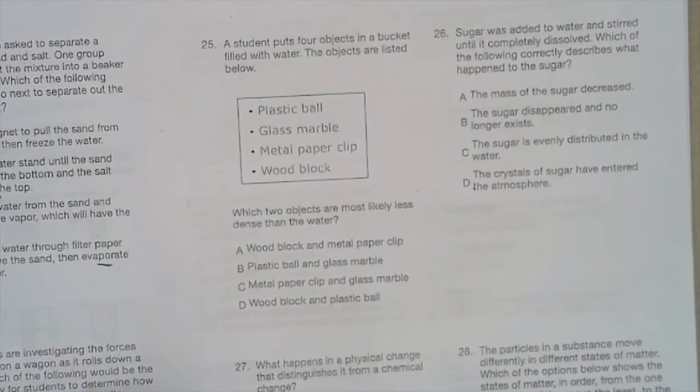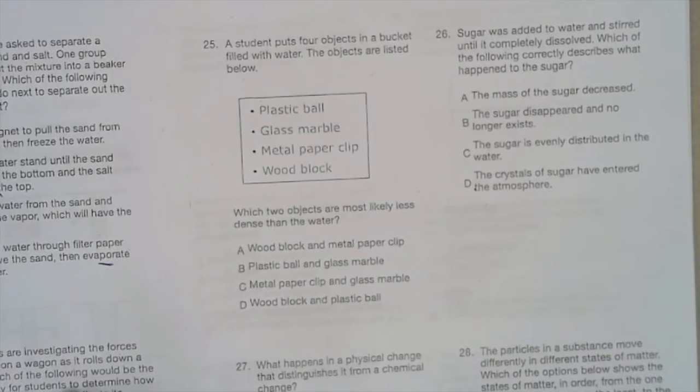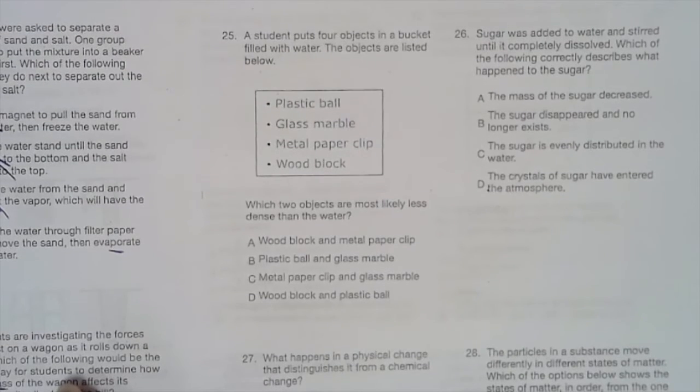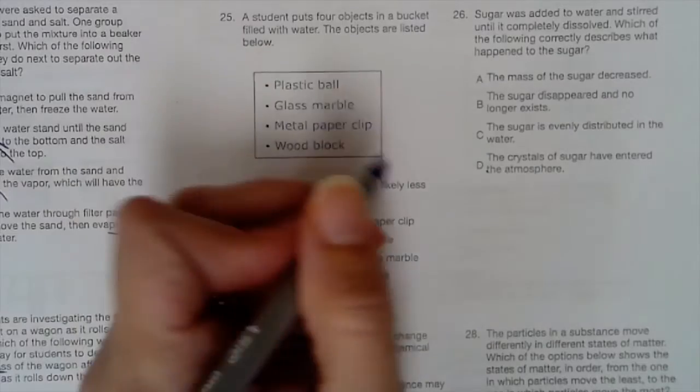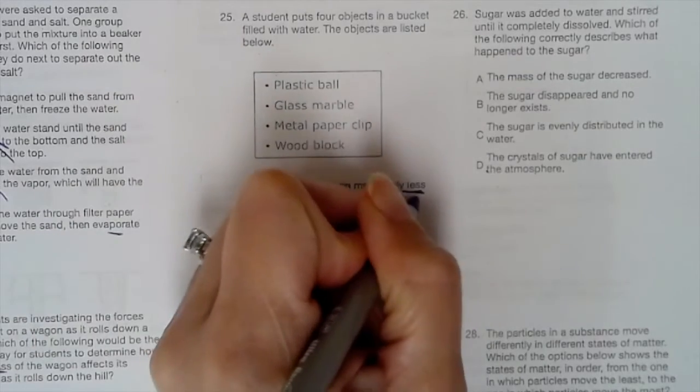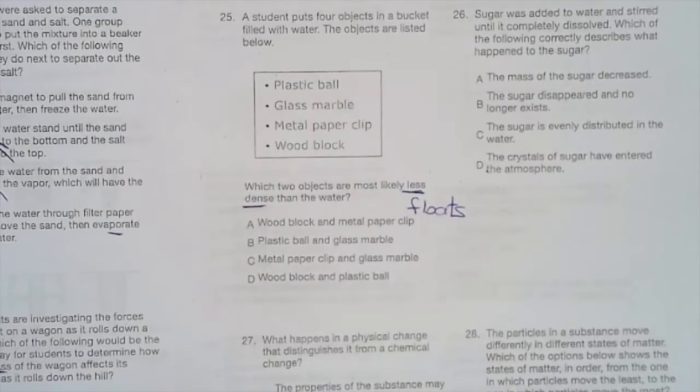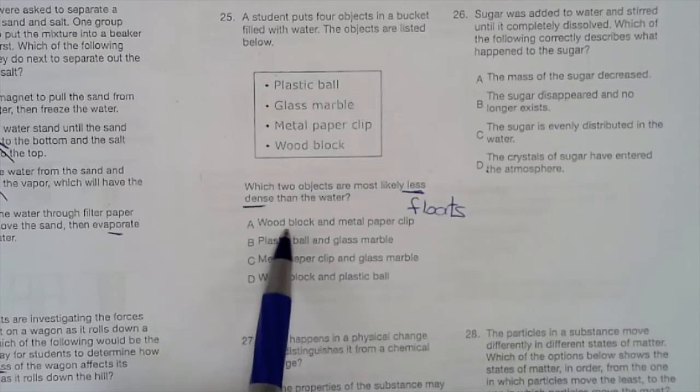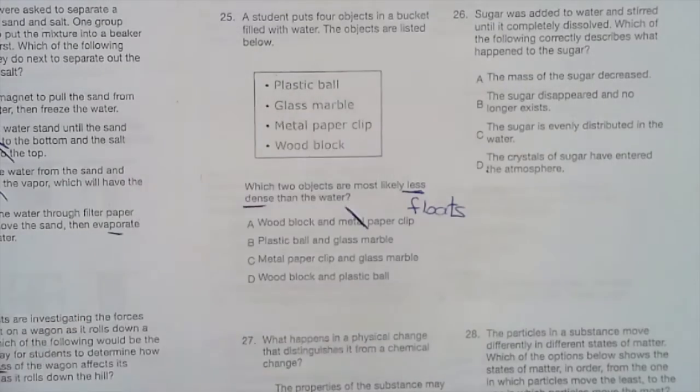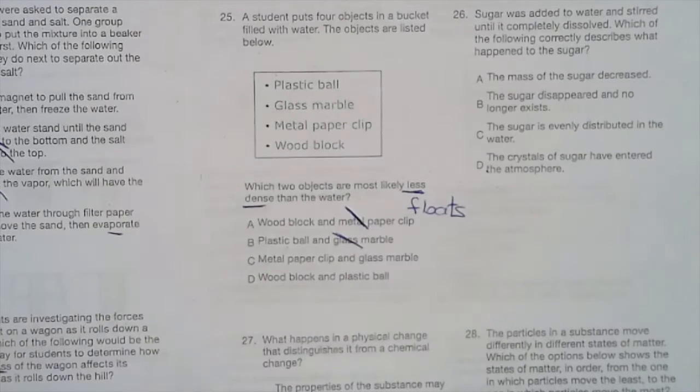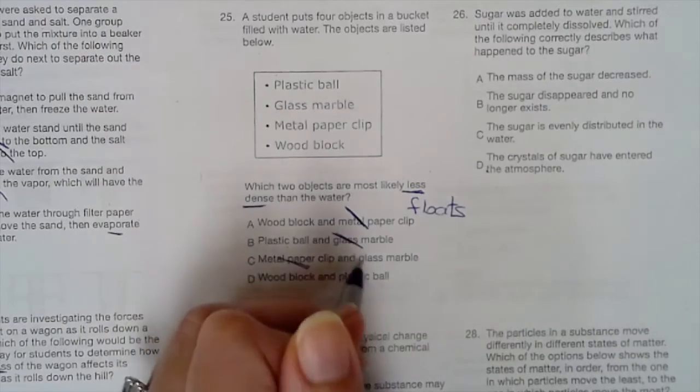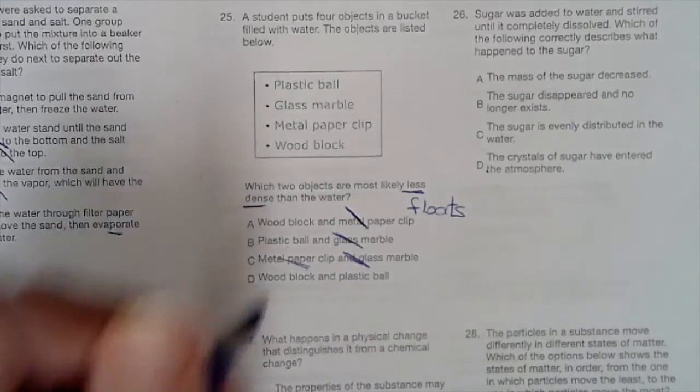A student puts four objects in a bucket filled with water. The objects are listed below. Plastic ball, glass marble, metal paper clip, wood block. Which two objects are most likely less dense than the water? Remember, if it's less dense, that means it floats. More dense means it sinks, but less dense means it floats. So a metal paper clip is going to sink. A plastic ball will float, but a glass marble will sink. Both of these are going to sink. So the wood block and the plastic ball would most likely float.